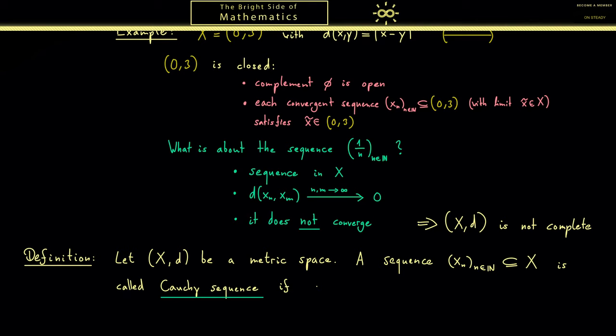More concretely, this means for all epsilon greater than 0, there exists an index capital N in ℕ such that for all indices n,m greater than this index N, we have that the distance between the members x_n, x_m is arbitrarily small, so less than epsilon. So this is the actual meaning of this limit before.